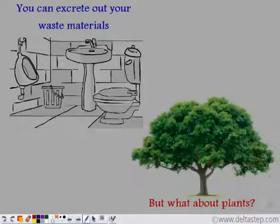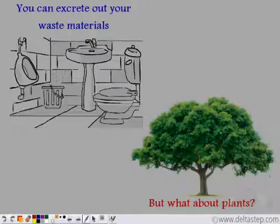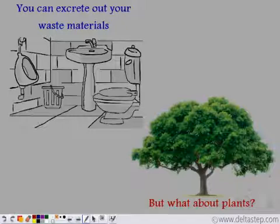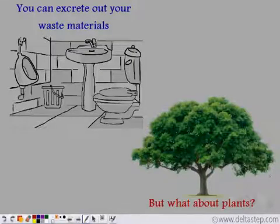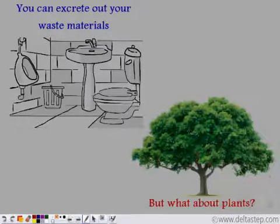All living organisms require food to survive. A portion of the food gets digested, and the portion that remains undigested needs to be excreted out. Whenever we feel the need to excrete waste materials, we go and use the washroom. But what about the plants? Plants are fixed in one position — how do they excrete out their waste products?